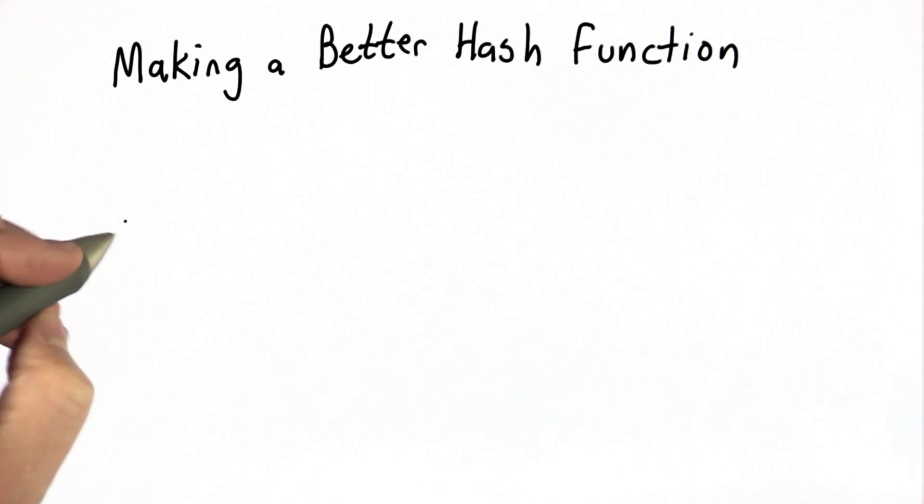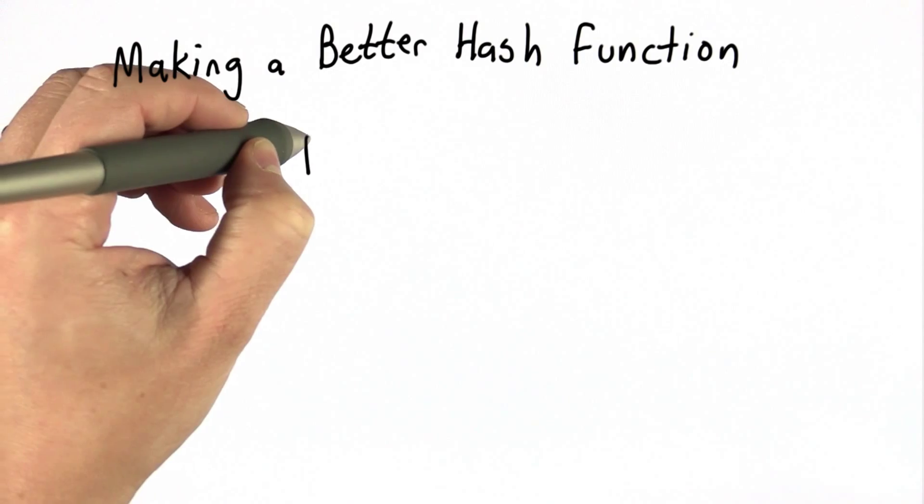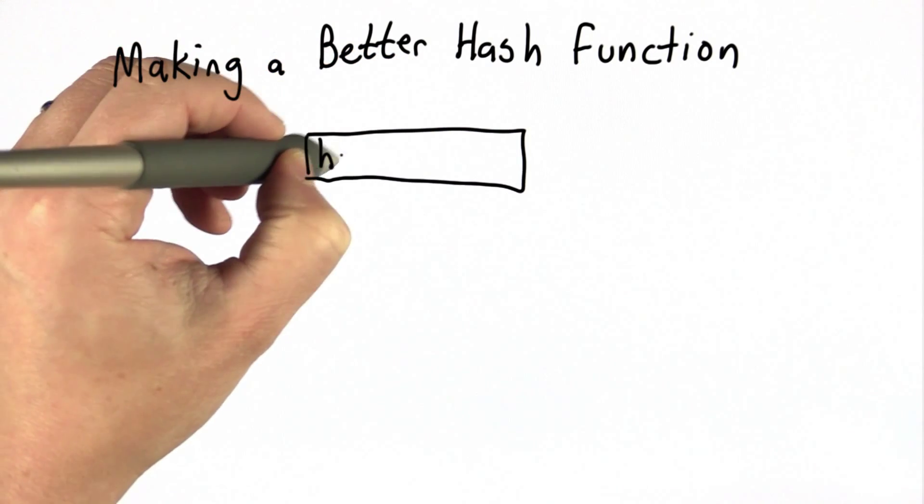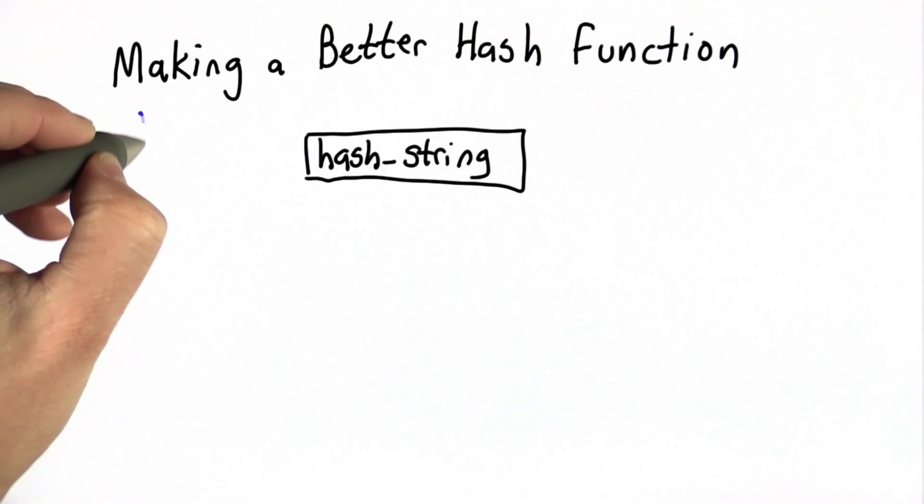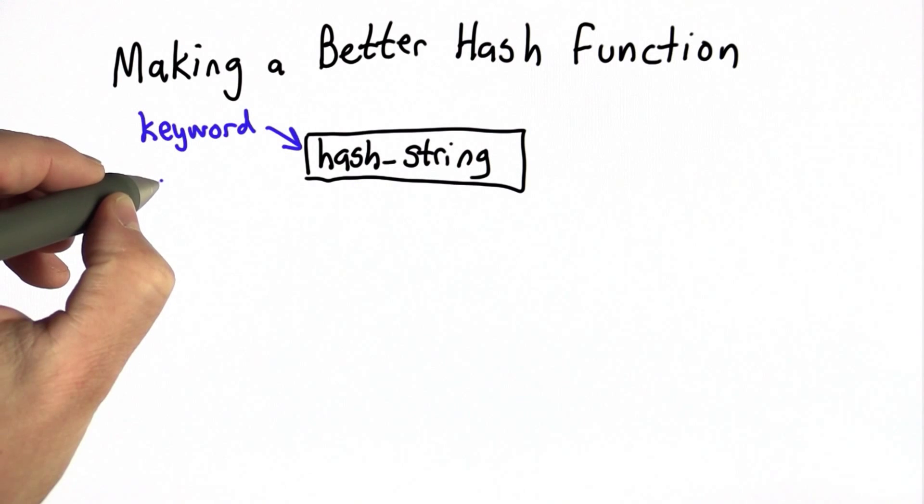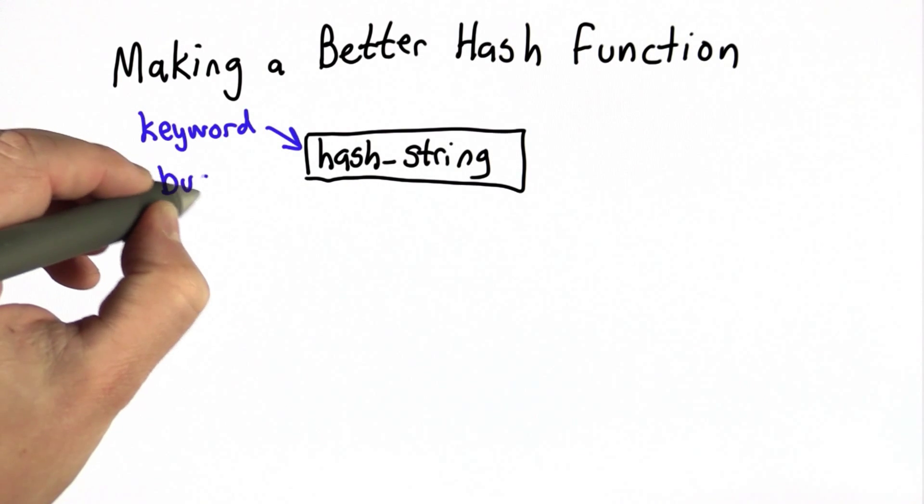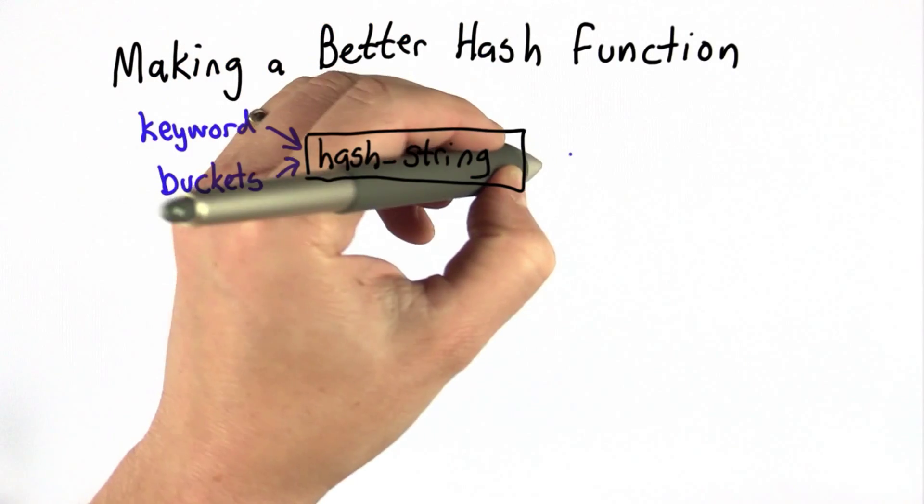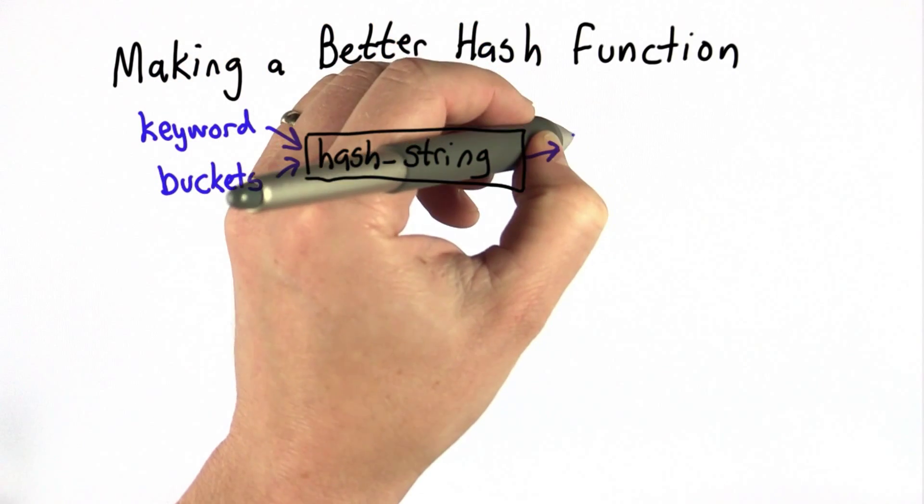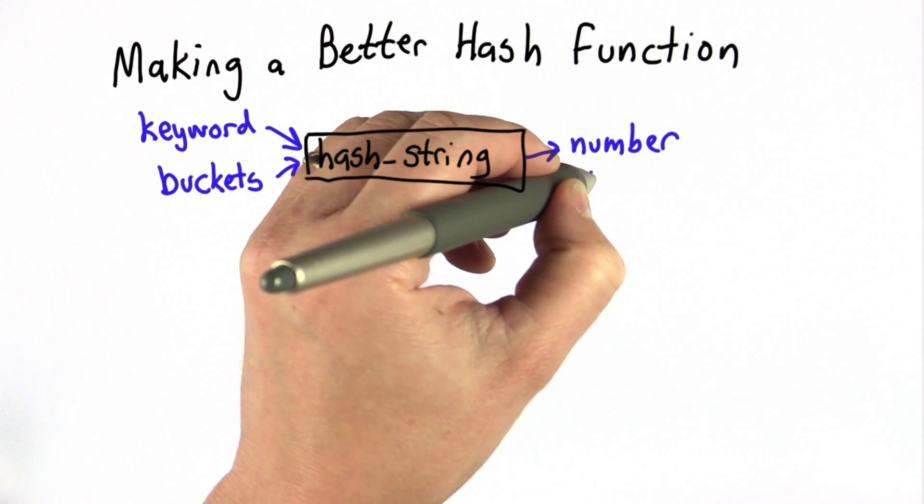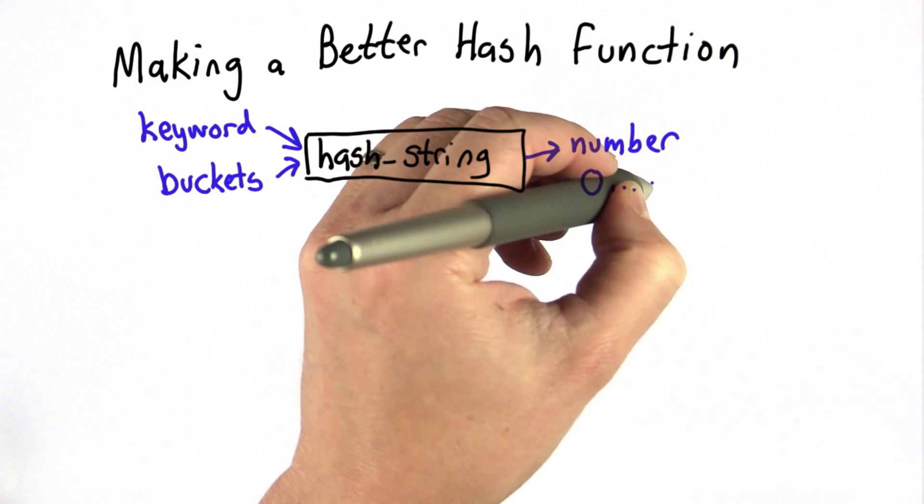Now we're going to think about how to make a better hash function. We want the same property we had before in the sense that it's one function that takes two inputs. The two inputs are the keyword, which is a string, and the number of buckets, which is a number. The output is the hash value in the range from 0 to number of buckets minus 1.